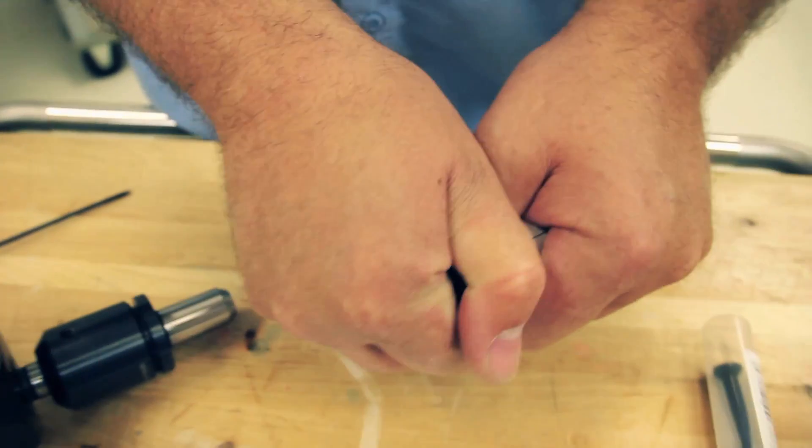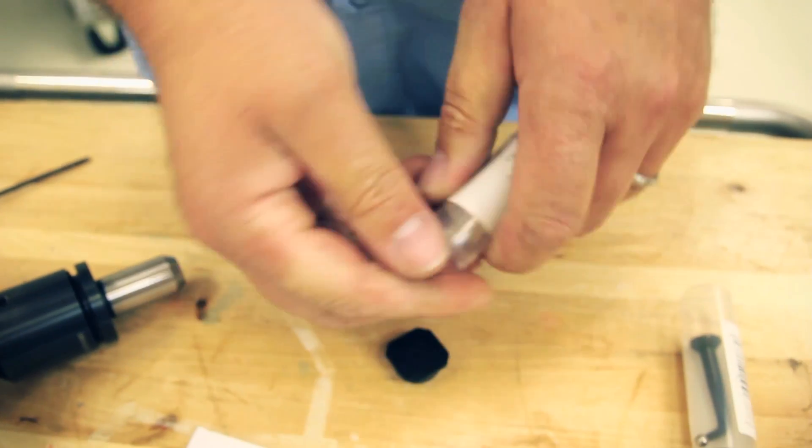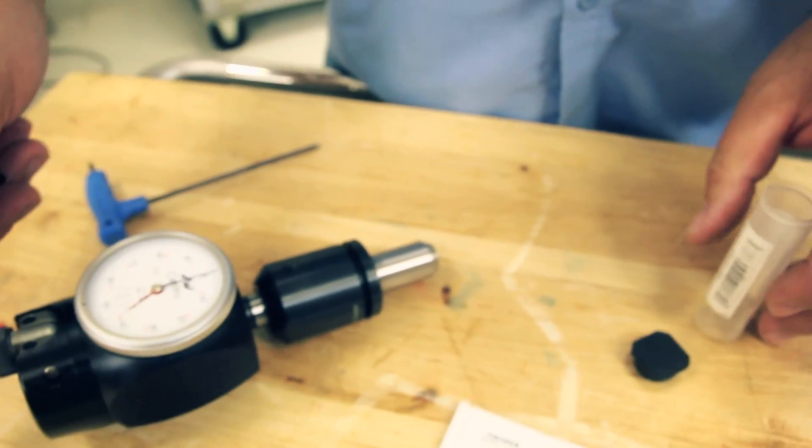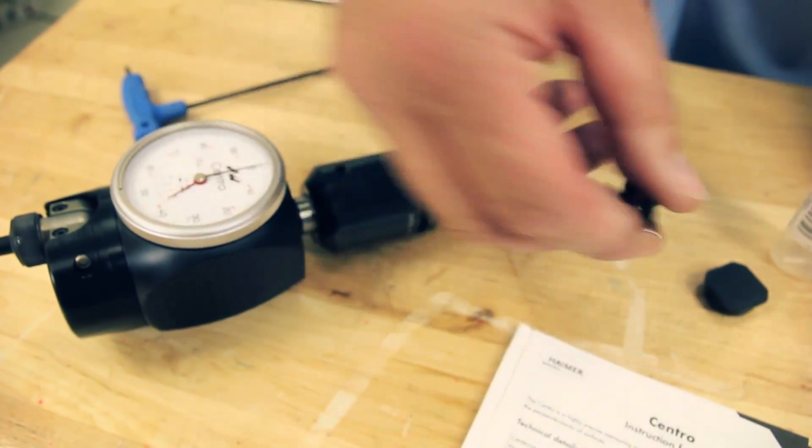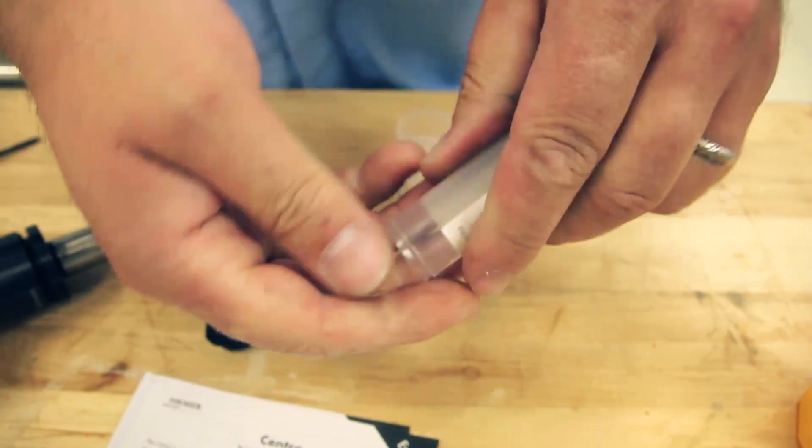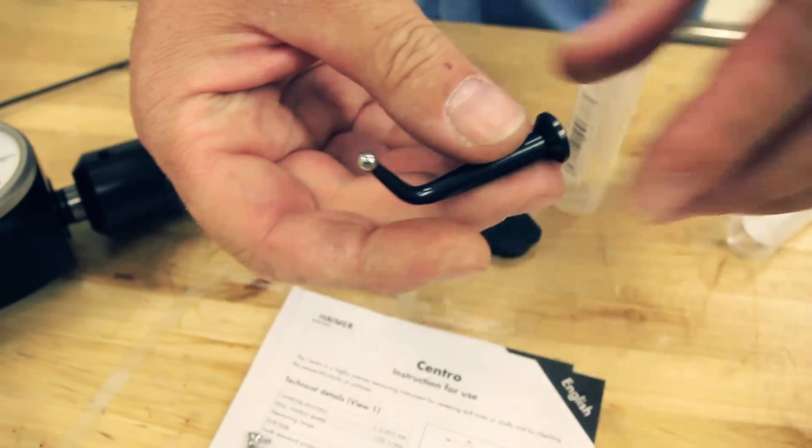And then here's a couple of different tips. The standard tip, I believe this is five millimeters that comes with it. This accessory tip has a two millimeter ball for getting into smaller holes. And then you have a bent tip for doing larger holes.